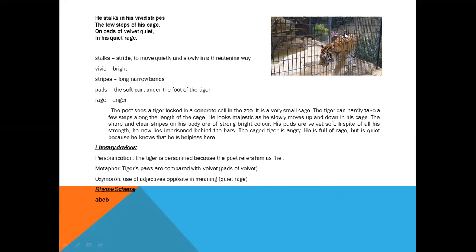Let's find out the literary devices here. First of all, the tiger is personified because the poet refers him as he. His foot sole is compared to the velvet cloth, so it is metaphor. Two opposite words are put together here, quiet rage, he's angry but quiet, so this is oxymoron. The rhyme scheme here: stripes is not rhyming with anyone, so we'll give it the letter A. Cage is rhyming with rage, so letter B for cage and letter B for rage. And quiet is another sound, so it is C here. So rhyme scheme of this stanza is A, B, C, B.